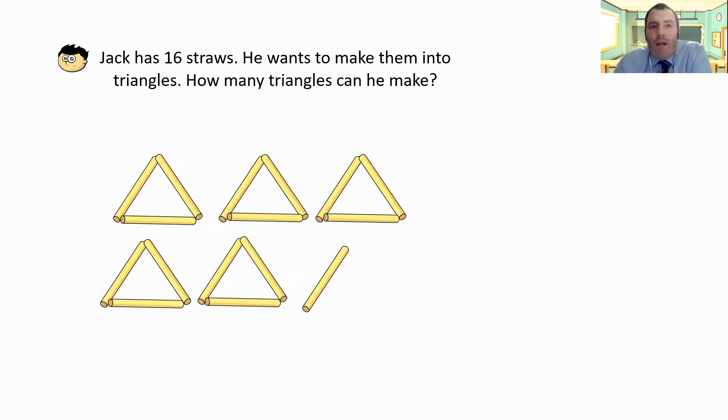Jack has got 16 straws and he wanted to make them into triangles. He can make five triangles, but he's got one left over. He's got one more than 15, which we know will give us an exact number of triangles. So 16 divided by three is five with a remainder of one.